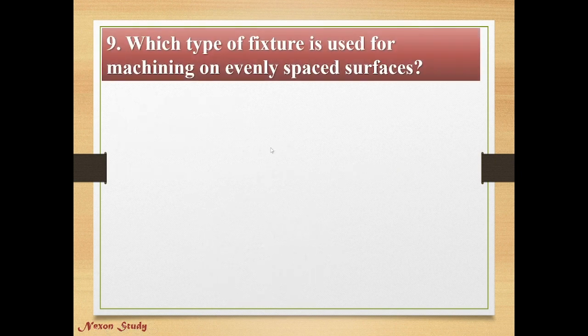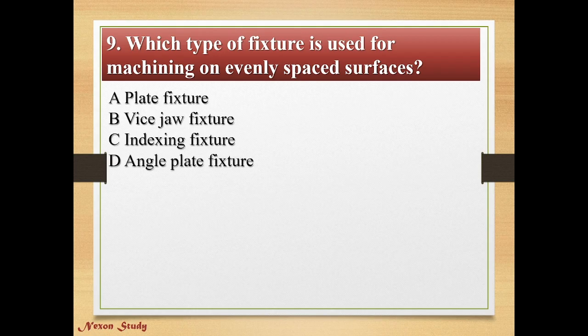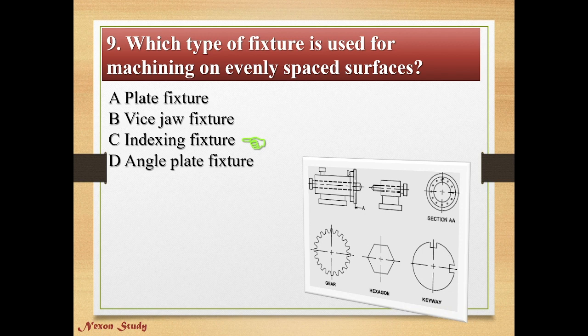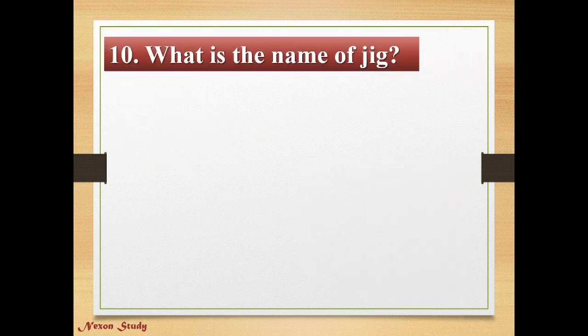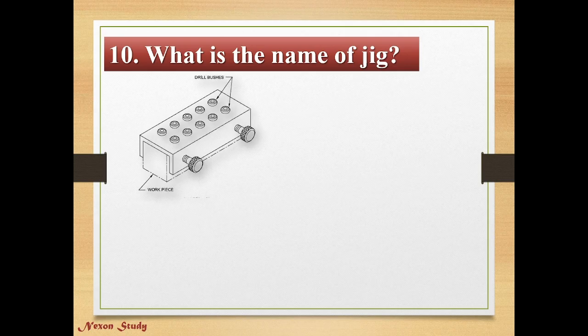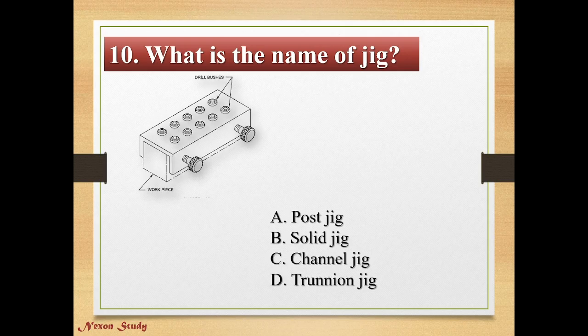Question: Which type of fixture is used for machining on evenly spaced surfaces? Options: plate fixture, vice fixture, indexing fixture, angle plate fixture. Correct answer is indexing fixture. This is the indexing fixture.